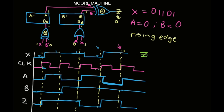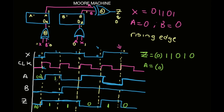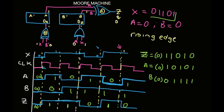So our Z starts at zero, then goes 1, 1, 0, 1, 0. Our A starts at zero: 0, 1, 0, 1, 1. Our B starts at zero: 0, 0, 1, 1, 1. And x remains 0, 1, 1, 0, 1. That's how the timing diagram for the Moore machine looks like.